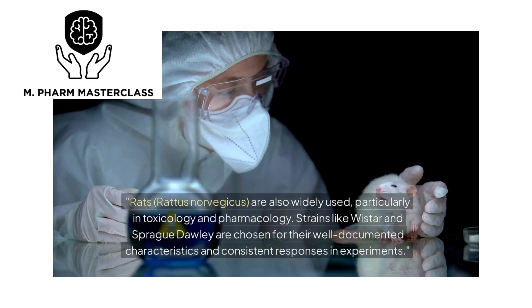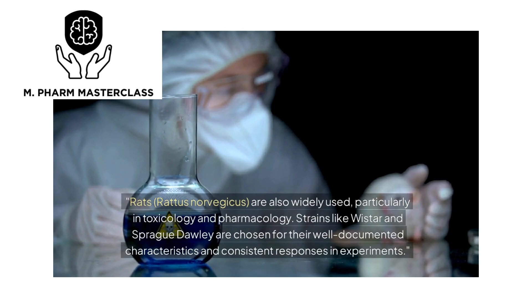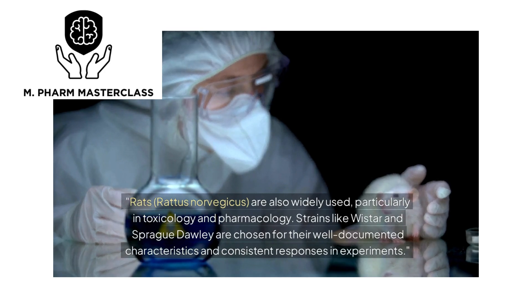Rats, Rattus norvegicus, are also widely used, particularly in toxicology and pharmacology. Strains like Wistar and Sprague-Dawley are chosen for their well-documented characteristics and consistent responses in experiments.